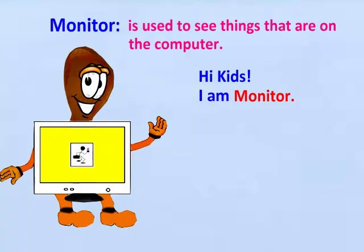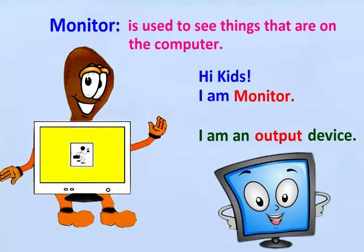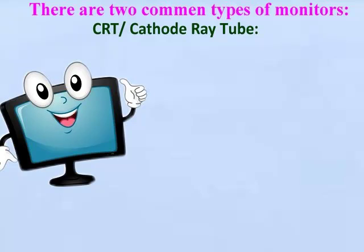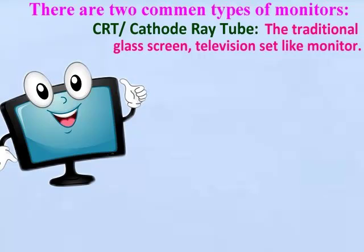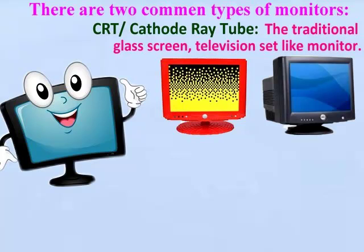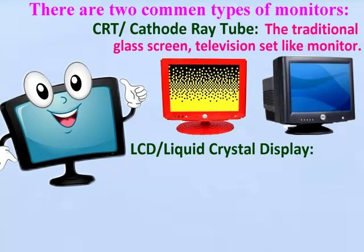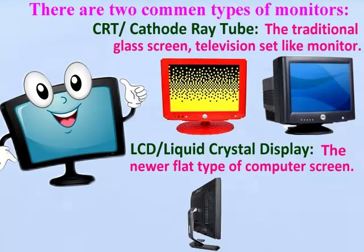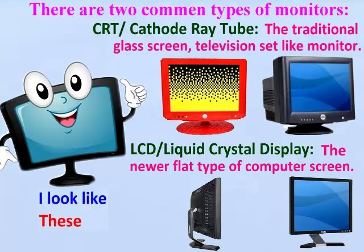The monitor is an output device — you can see your work on it. There are two common types of monitors: CRT (cathode ray tube) monitor, which is the traditional glass screen television-set-like monitor, and LCD (liquid crystal display) monitor, which is the newer flat type of computer screen.